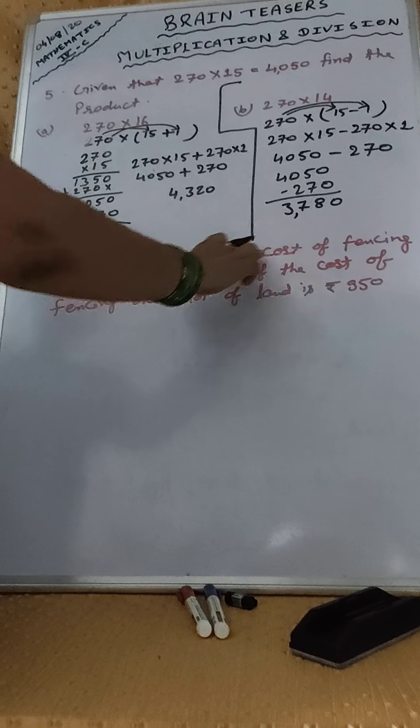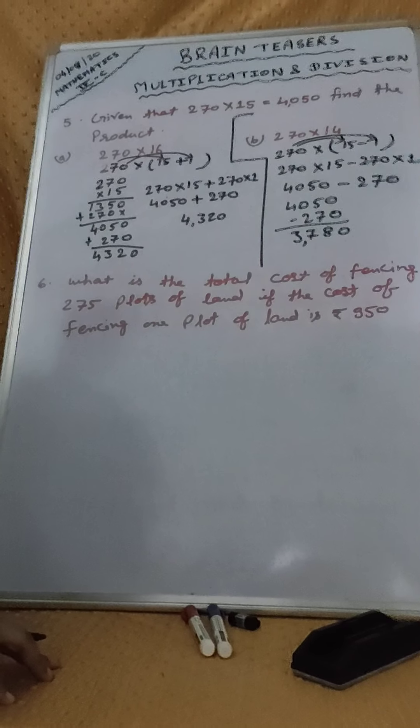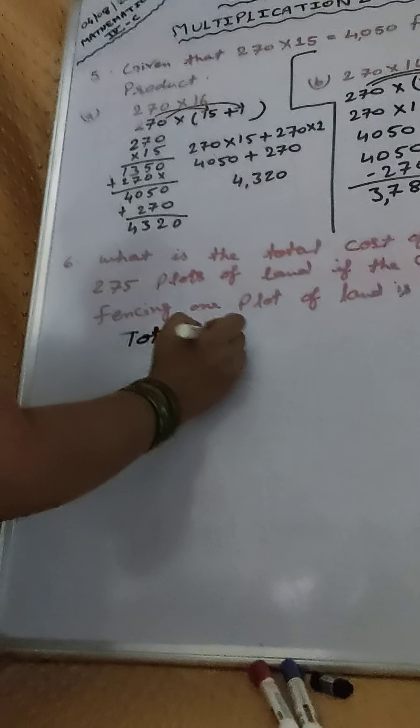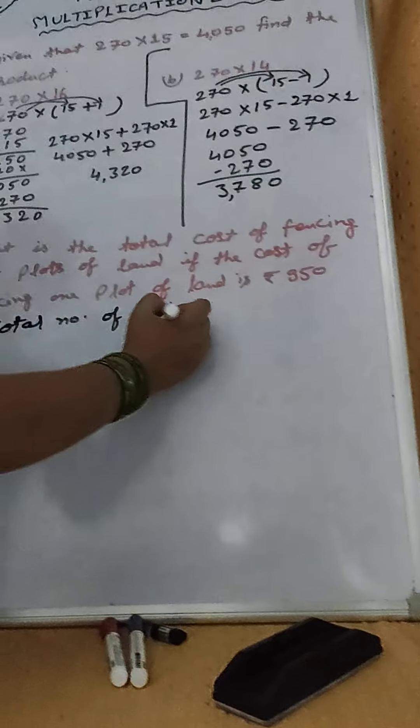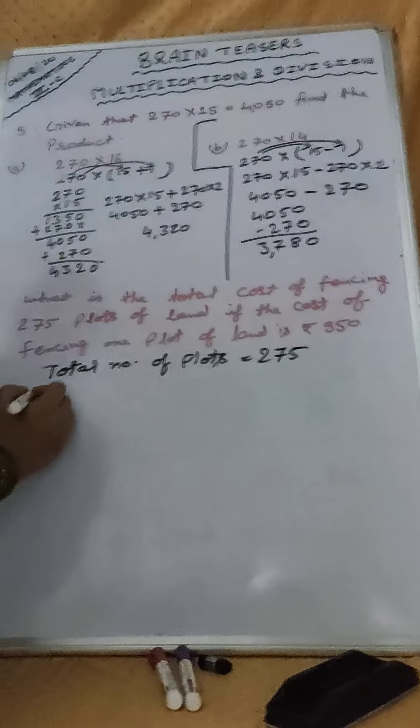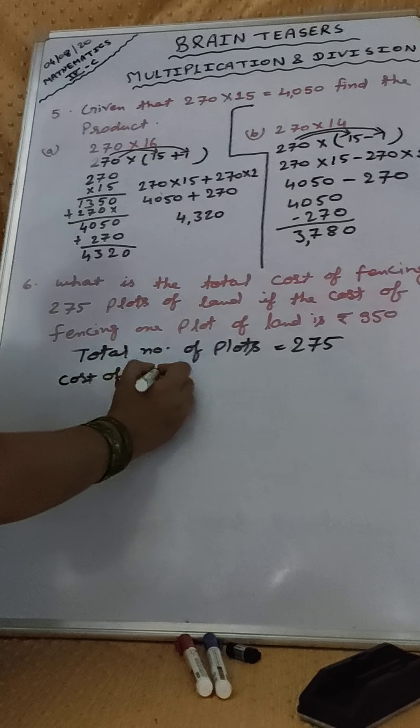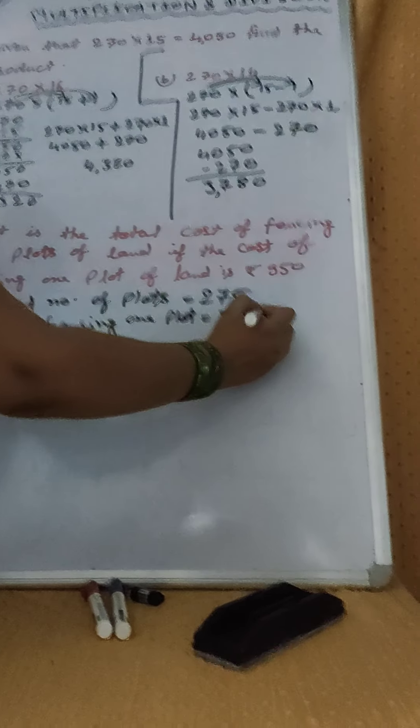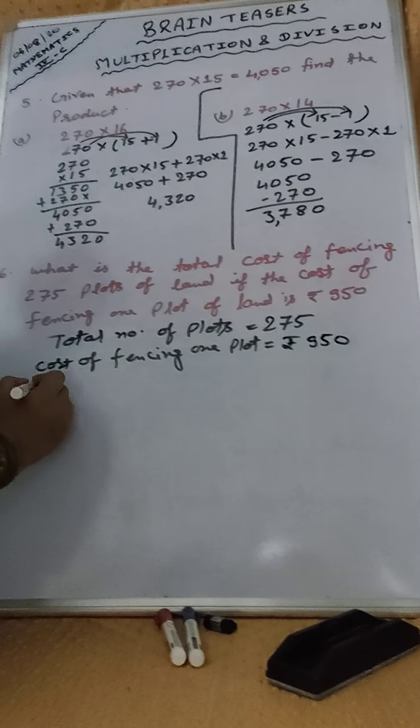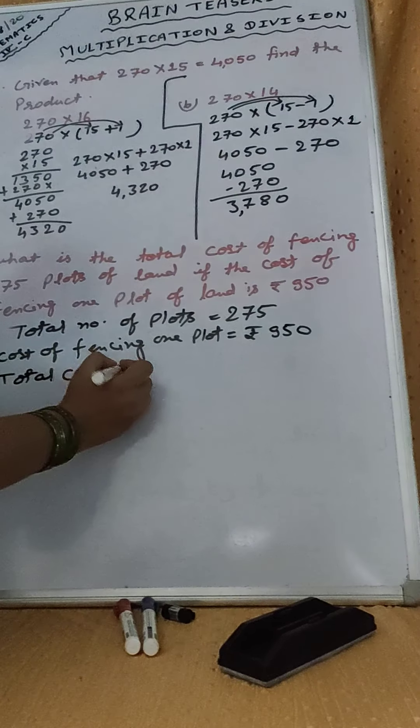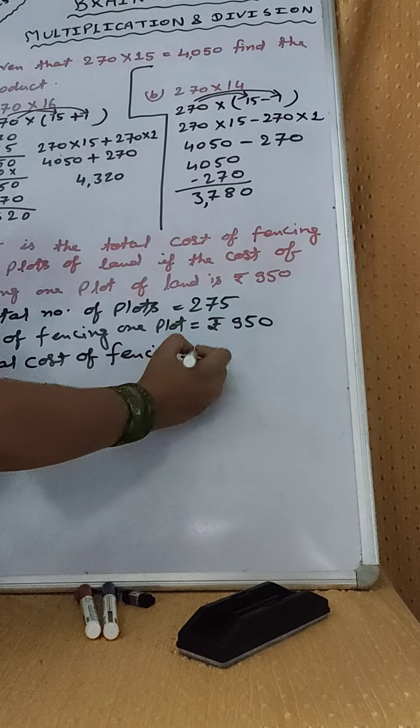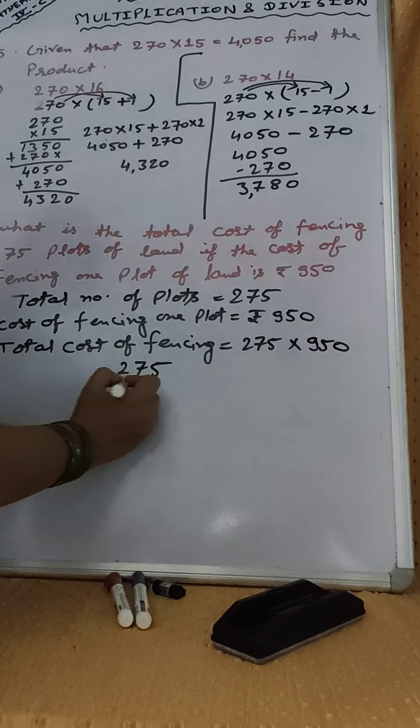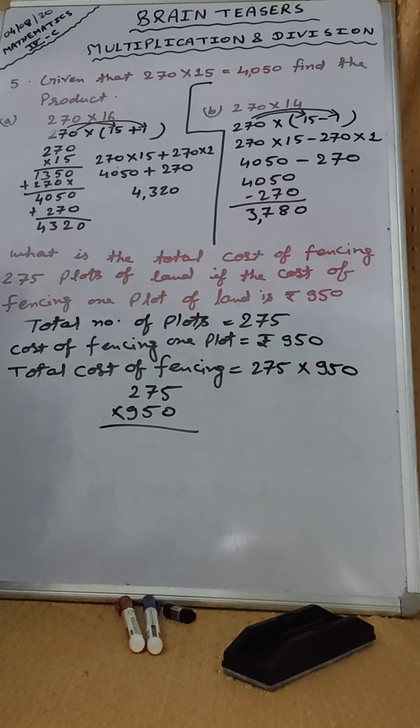Now, here we have to find out the total cost. So, we should multiply here. Now, at first we will write here a statement. Total number of plots, that is 275. Next, cost of fencing 1 plot, that is Rs. 950. We have to find out the total cost of fencing. That will be 275 into 950.